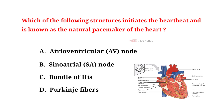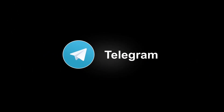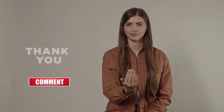Which of the following structures initiates the heartbeat and is known as the natural pacemaker of the heart? A. Atrioventricular node. B. Sinoatrial node. C. Bundle of His. D. Purkinje fibers. And the correct answer is B. Sinoatrial node. Drop your answers in the comment section below. For downloading PDF content and for latest updates, follow our Telegram channel — link in the description. If you like this video, don't forget to hit that like button. Thanks for watching.